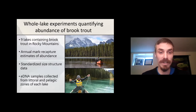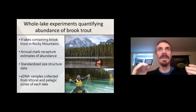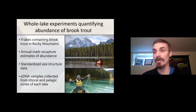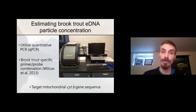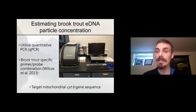We also collected standardized size structure data by conducting mixed-mesh gill net sets — basically standardized index netting. Then we collected eDNA samples from the littoral and pelagic zones of each lake to calculate an average lake-wide eDNA concentration. We estimated the amount of brook trout eDNA in these samples using quantitative PCR, or qPCR, and used a brook trout-specific primer-probe combination developed by Taylor Wilcox in 2013 that targets the mitochondrial cytochrome B gene sequence.